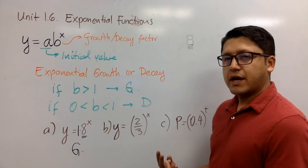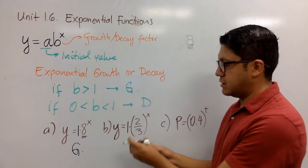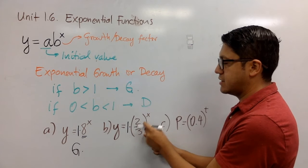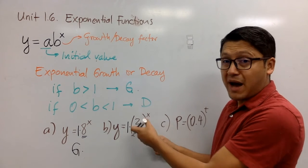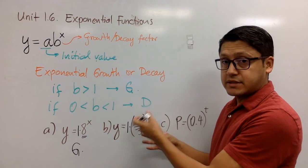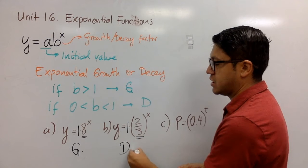In this case, again, what is the initial value? The initial value is 1, again, we don't see it because we need to recognize that B is the term that has the power and the base and X is the exponent. So in this case, 2 thirds is less than 1, so we're talking about decay.